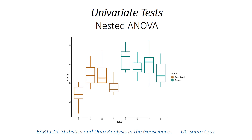This video builds upon the previous one which covered factorial ANOVA. Like that topic, nested ANOVA is a method for comparing a single variable between groups, but in this case those groups have subgroups nested within them.